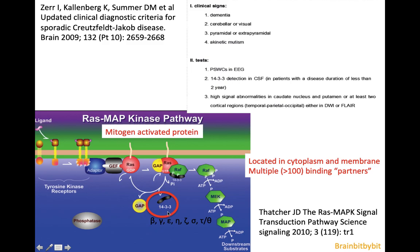The 14-3-3 protein is highly conserved during evolution, meaning it's important, and it binds to more than 100 different molecules that are all involved in apoptosis, mitosis, and meiosis. It's located in the cytoplasm, organelles, and membrane. When neurons die — and in Creutzfeldt-Jakob disease there is neuronal death and reactive astrogliosis — this 14-3-3 protein goes up in the CSF. Since it is a marker of neuronal death, you can also see it in stroke or encephalitis, so it's not specific for CJD.